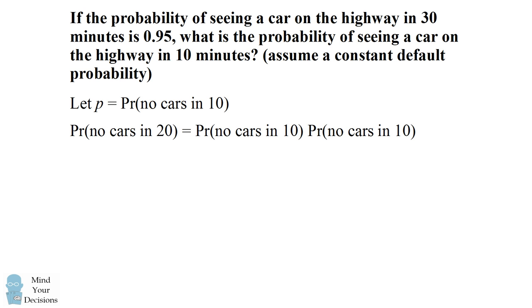We're treating each of these like a coin flip, so the probability of seeing no cars in each 10-minute interval is equal to p, which means the probability of seeing no cars in 20 minutes is equal to p squared.